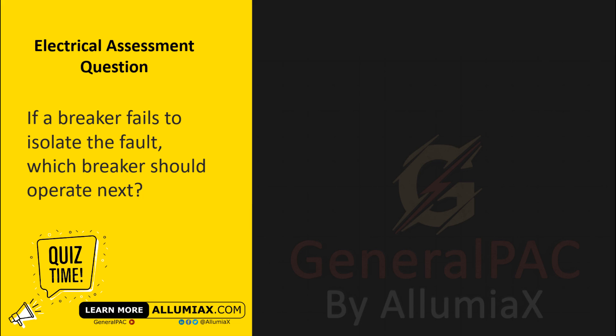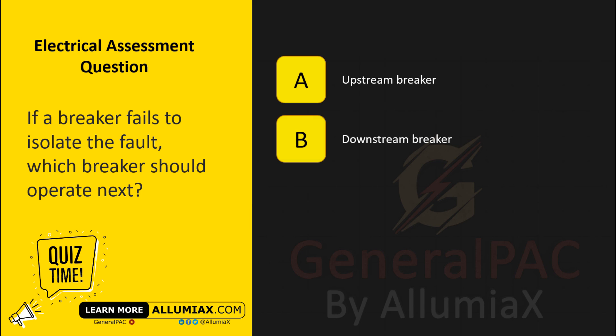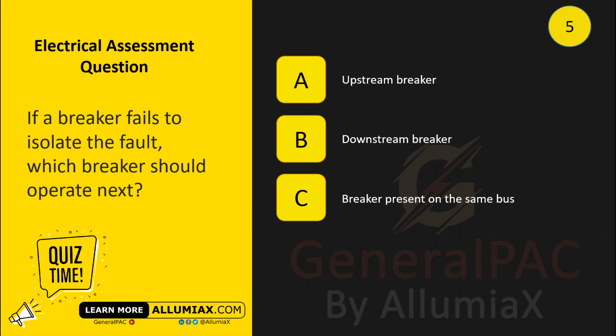If a breaker fails to isolate the fault, which breakers should operate next? A. Upstream breaker. B. Downstream breaker. C. Breaker present on the same bus.